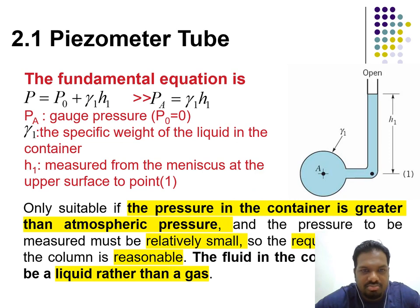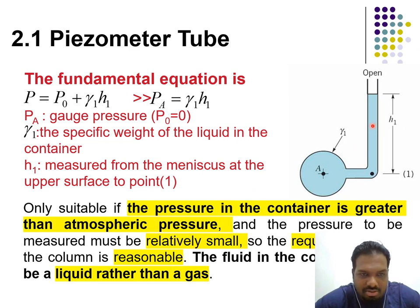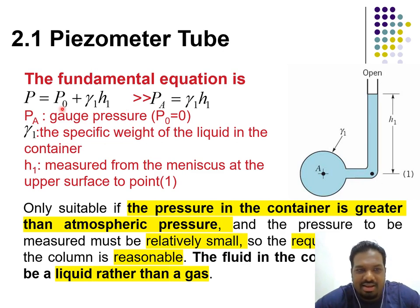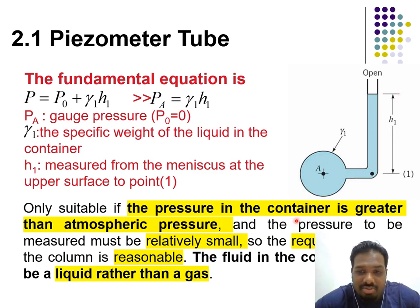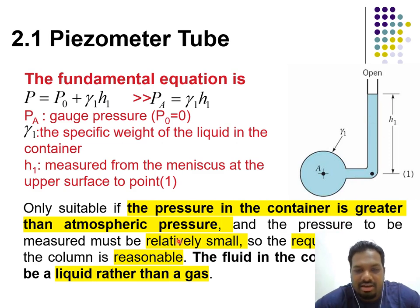The first type is the piezometer tube. It uses the fundamental equation p equals p0 plus gamma times h1, where gamma is the specific weight and p0 is atmospheric pressure and h is the height. It is only suitable if the pressure in the container is greater than atmospheric pressure and the pressure to be measured is relatively small, because it is measured based on height — a very high pressure would require a very long tube.